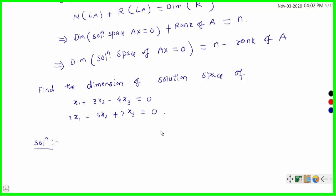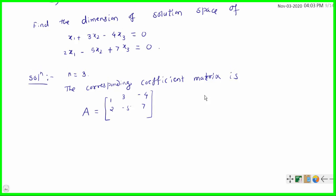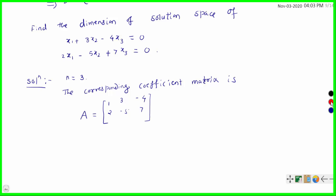These are homogeneous linear equations. Here n equals the number of unknowns, which is 3 for this example. The corresponding coefficient matrix is A = [[1, 3, −4], [2, −5, 7]]. By the previous theorem, dimension of the solution space equals n minus rank of A. So we need to calculate the rank of this matrix A.